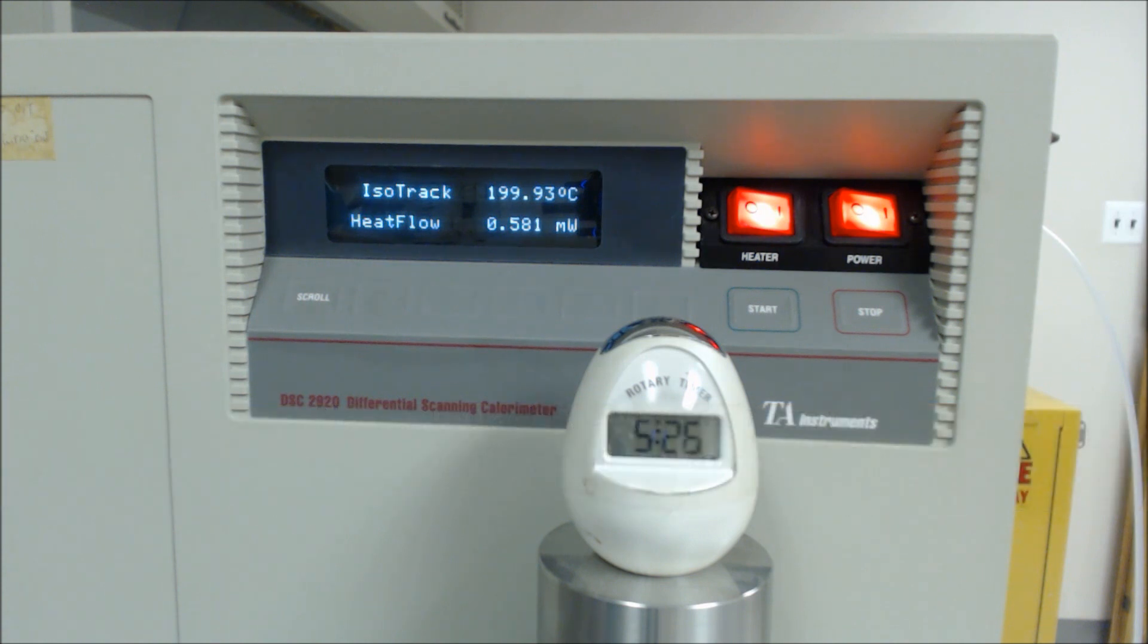After the T sub 0 is passed, the cell continues its isothermal track at 200 degrees C. This is by far the longest portion of the test. At this point, there is nothing to do but wait for the oxidative onset to occur. For standard OIT, GSI sets the second iso track to run for a duration of 300 minutes, as 5 hours is plenty of time to experience the oxidative onset and subsequent exotherm for most HDPE geomembranes.